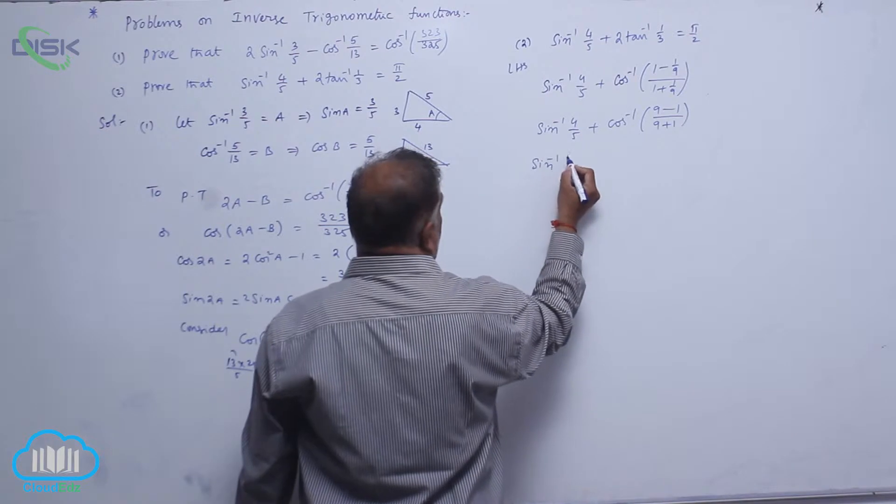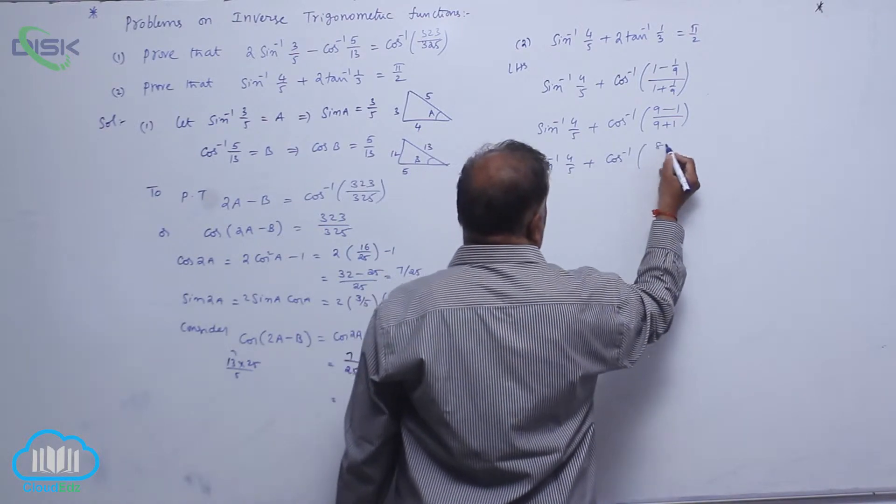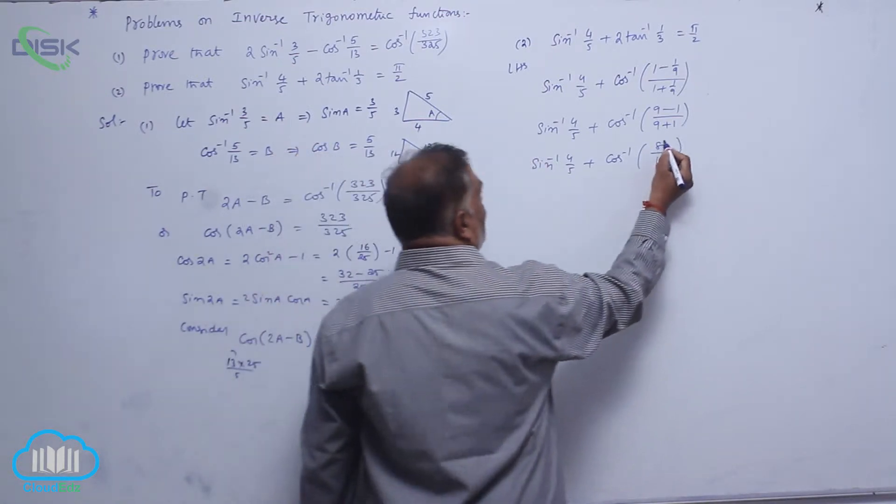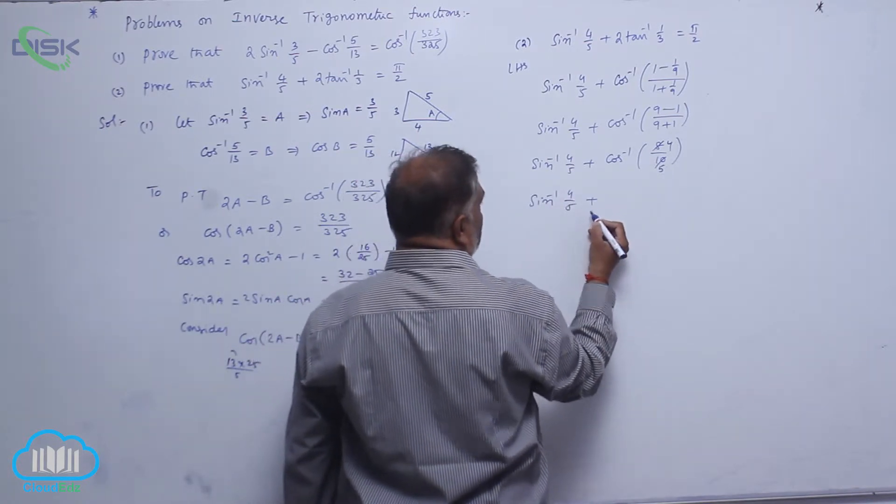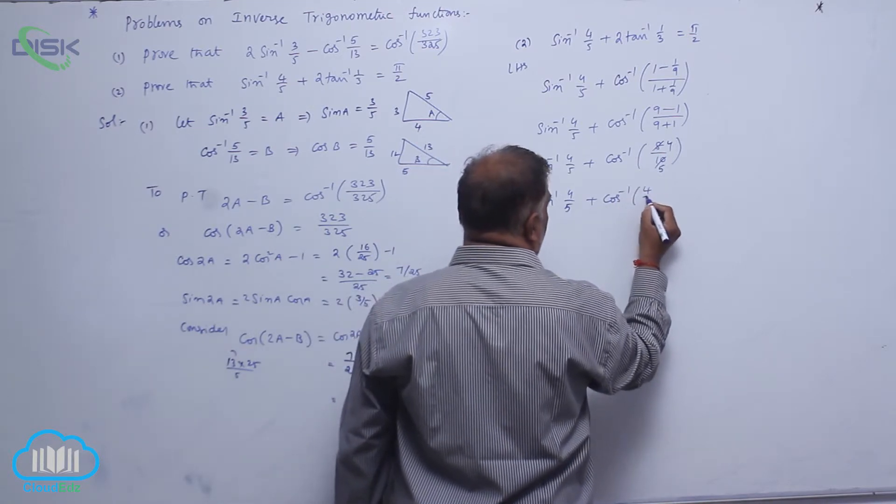It is sin inverse 4 by 5 plus cos inverse 8 by 10. With 2 you can cancel off. This is 4 times, this is 5 times. So, ultimately leaving sin inverse 4 by 5 plus cos inverse 4 by 5.